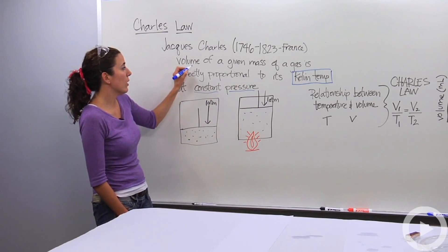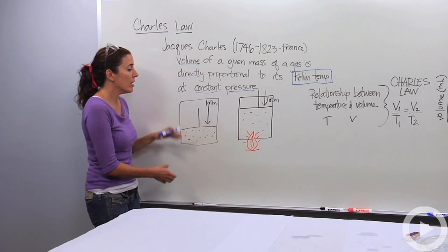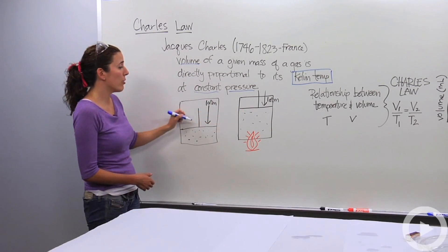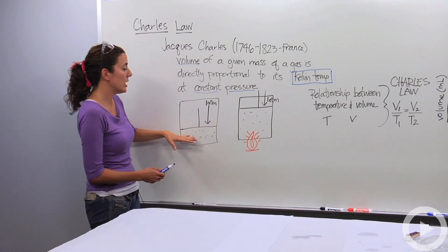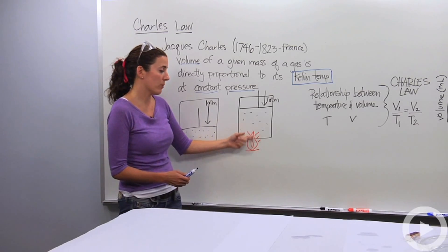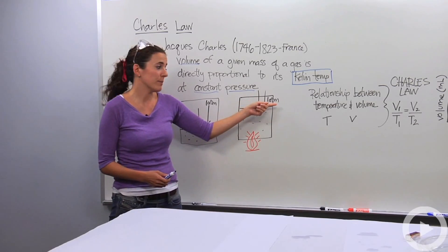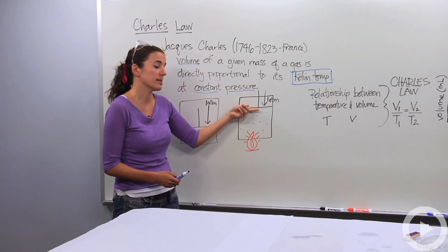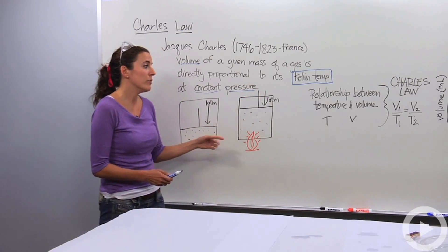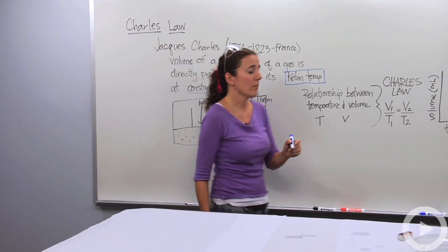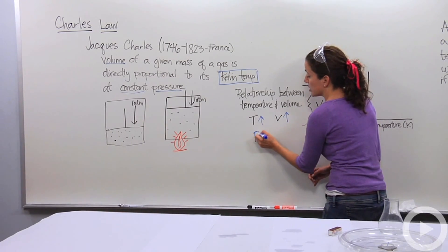The two variables that are changing are volume and temperature — those are the two variables you're dealing with. So let's say we have two canisters. Notice they're at the same pressure. In this canister we have gas at normal temperature and pressure, and then we actually heat it up. We're increasing the kinetic energy; those gas particles are now moving at a faster rate. If we want to keep the pressure constant, they're going to push against the top and actually move, making the volume larger. So as we increase temperature, we also increase the volume, as long as pressure is constant.